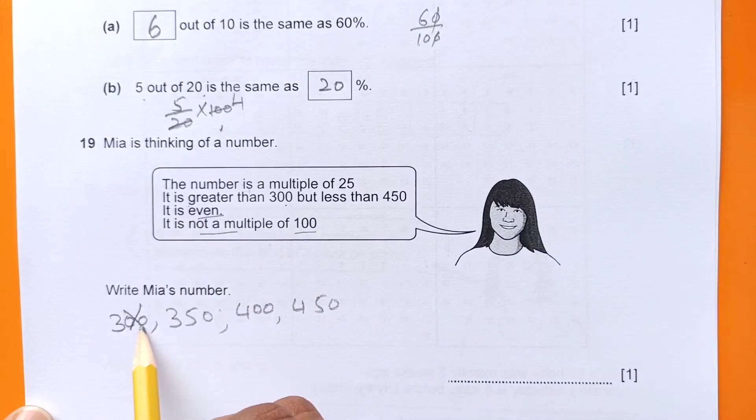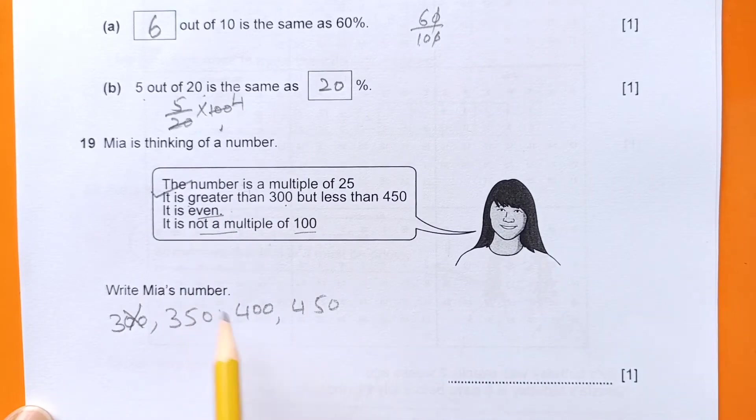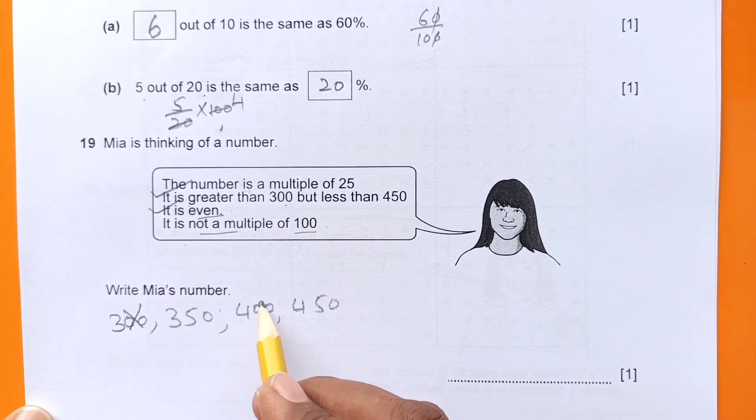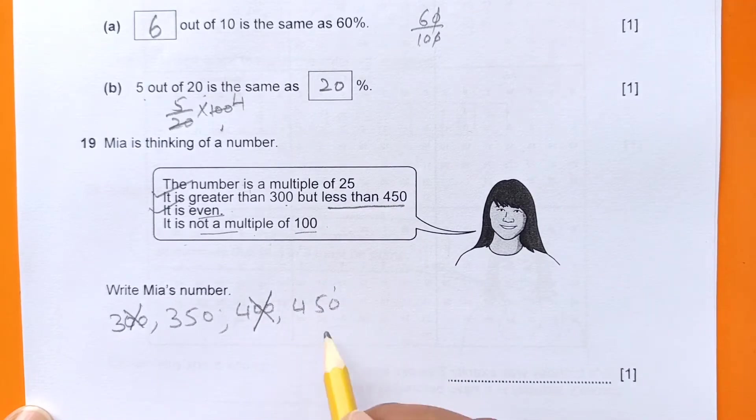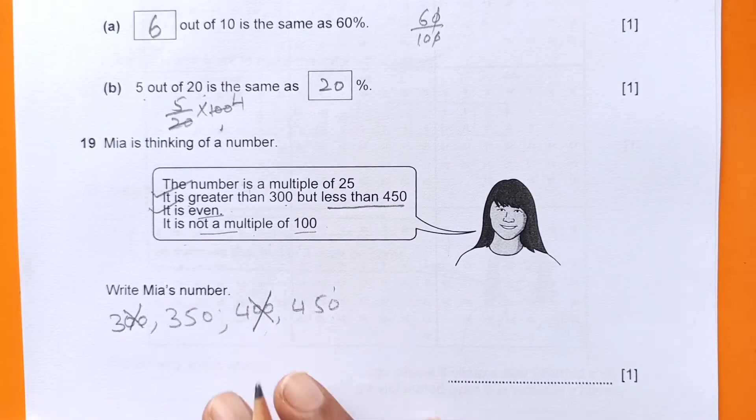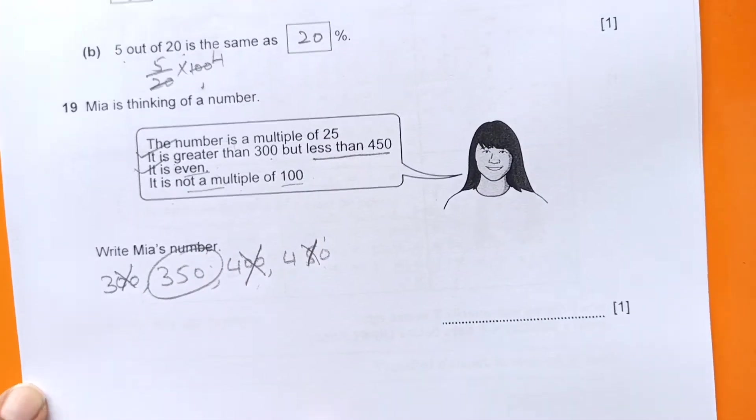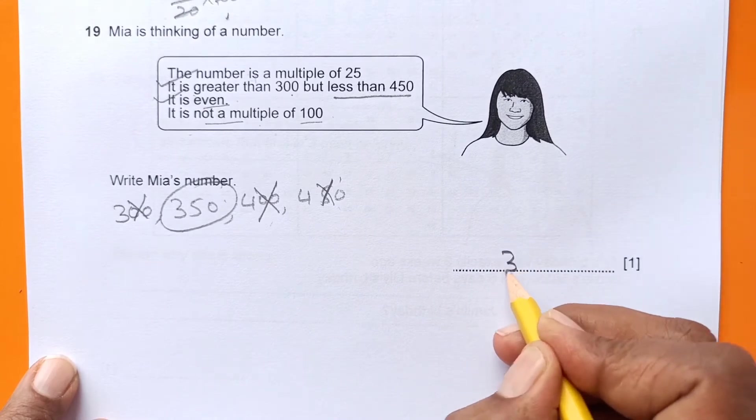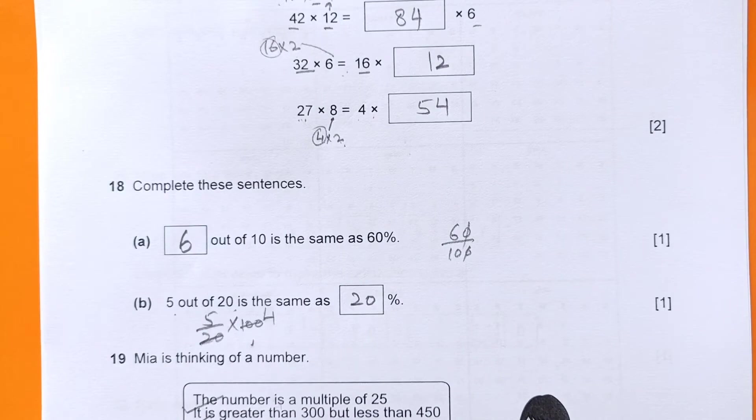We are looking for numbers between 300 and 450. It's greater than 300, so out of these, all are even. It's not a multiple of 100, but it's less than 450, so we're looking for a lesser number. The final answer is 350.